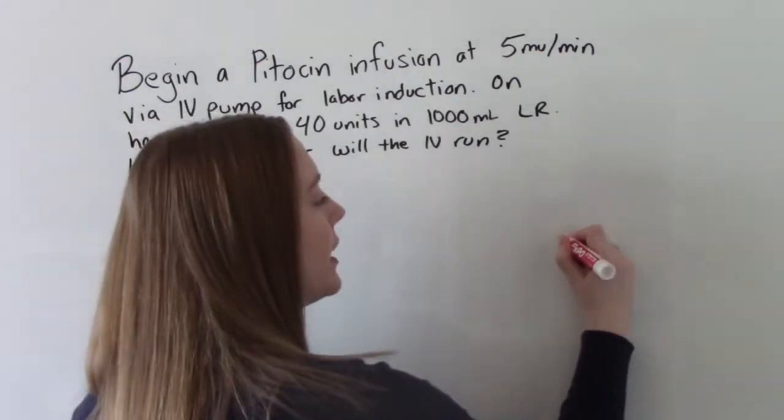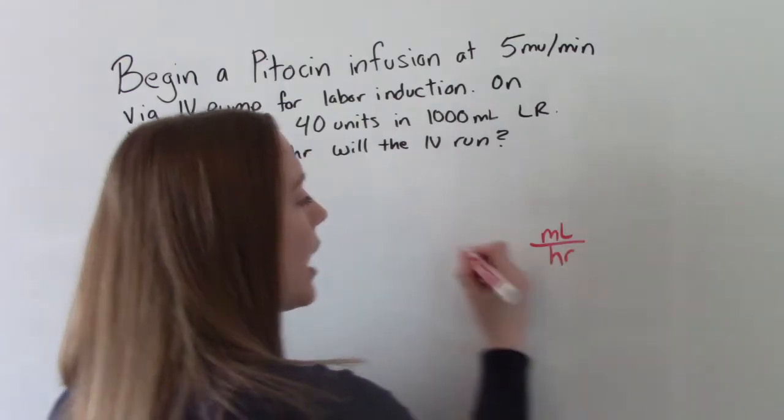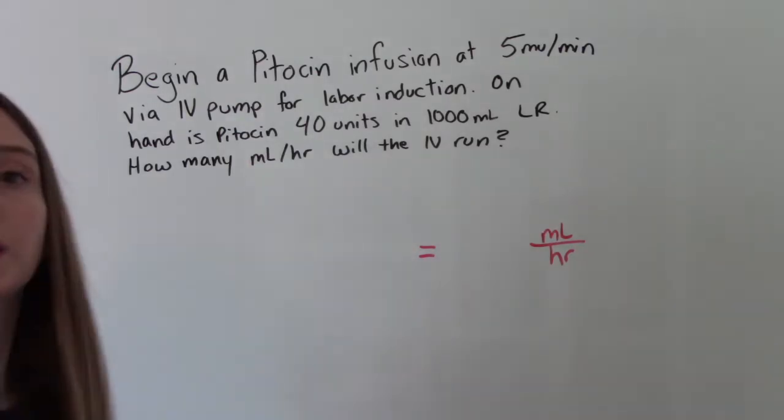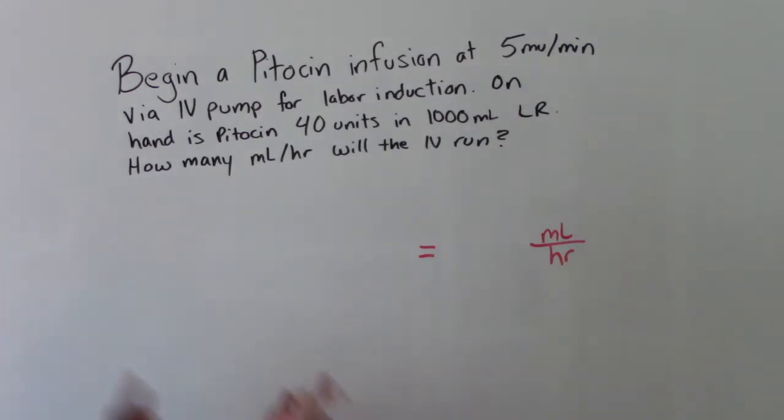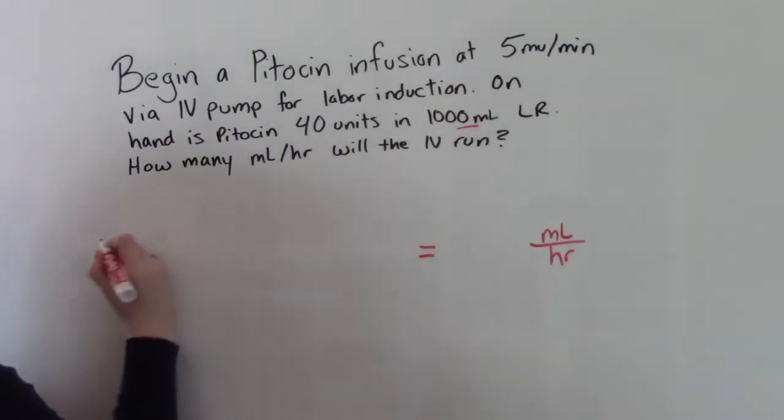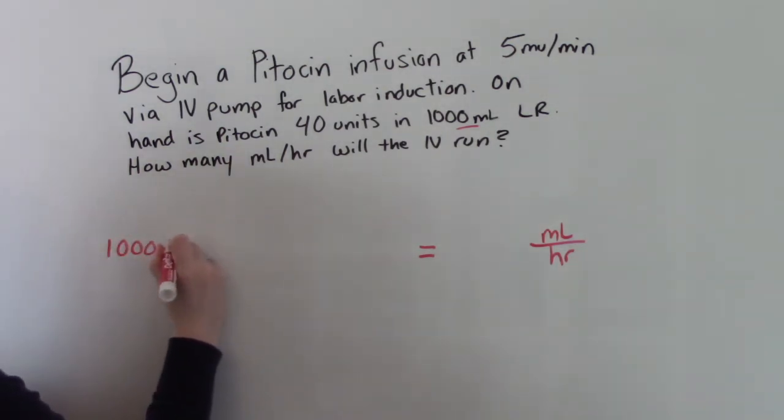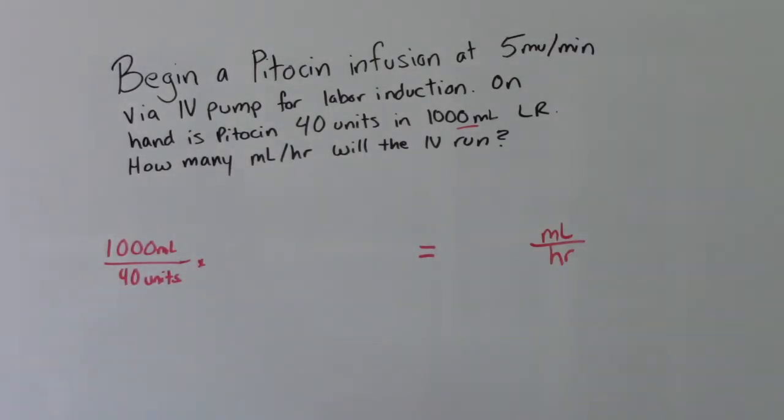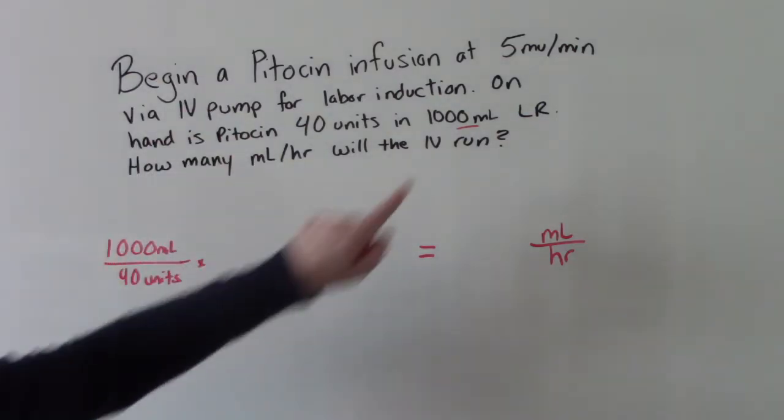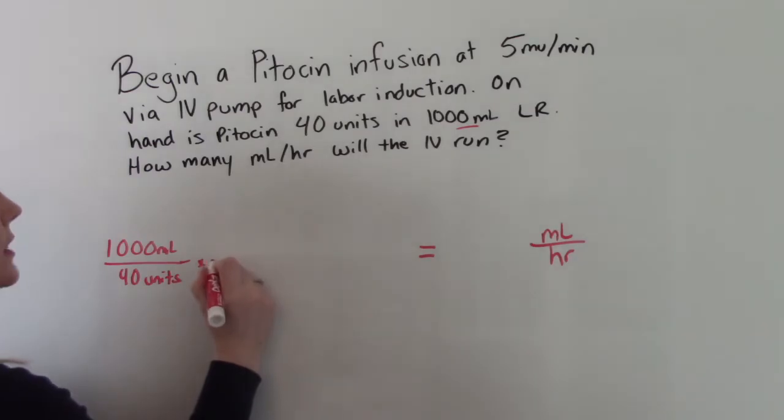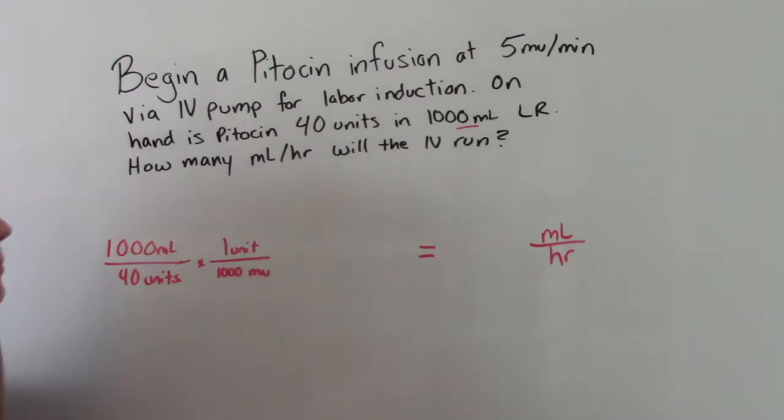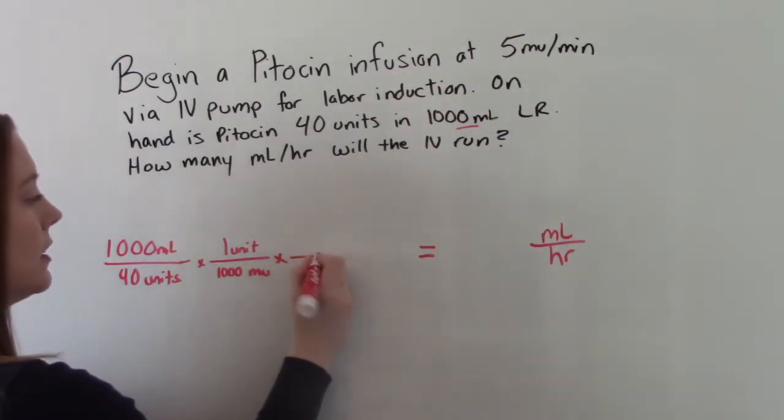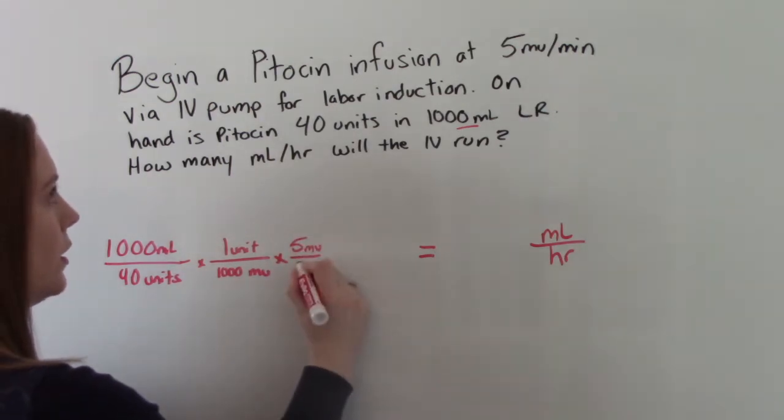So that's what we're looking for in our answer is mLs per hour. In order to get to that we have to do a couple of steps. First of all, where do we already have mLs? Right here. So we'll put that in our numerator. 1,000 mLs is the equivalent of 40 units for our problem. The next thing we need to do is get a converting factor because we don't have units anywhere else. We have mLs. So what is the conversion? 1 unit is 1,000 milli units. Then we can add this. So 5 milli units over 1 minute.